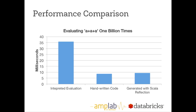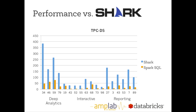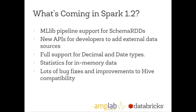We also ran benchmarks on TPC-DS — a large comprehensive benchmark for decision support analytics. Across the board, Spark SQL is significantly faster, sometimes up to 8x faster than other systems built on top of Spark such as Shark, and quite competitive with Presto and Hive. Coming in Spark 1.2: ML pipeline support, new Data Sources APIs, full support for fixed-precision decimal and date types, statistics for in-memory data to efficiently skip partitions, and tons of bug fixes. One of the great things about such a hot community project is that people using it in real deployments are constantly contributing back small bug fixes.